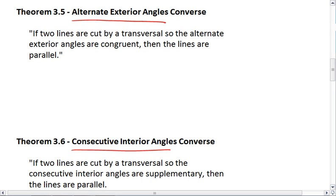Theorem 3.5 is the alternate exterior angles converse. This tells me if I have two lines cut by a transversal and alternate exterior angles are congruent, then the lines are parallel.